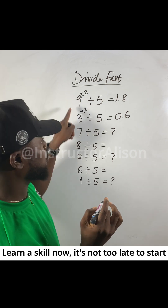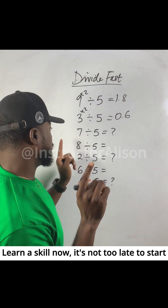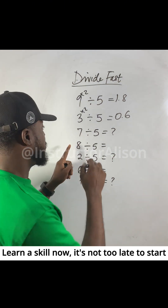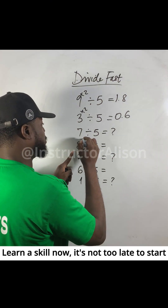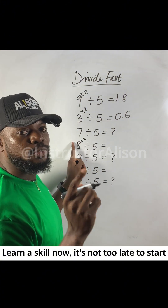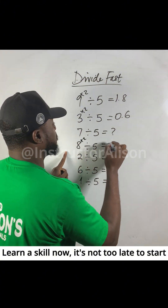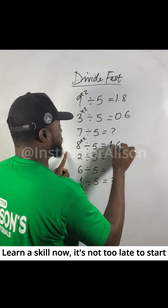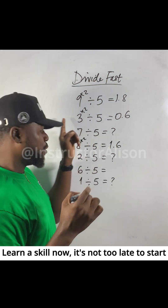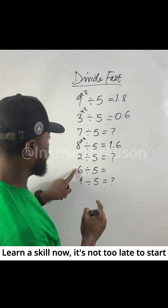Try this one and put the answer in the comment section. For a bigger number divided by 5, multiply by 2. For example, 8 times 2 gives you 16, so the answer is 1.6.